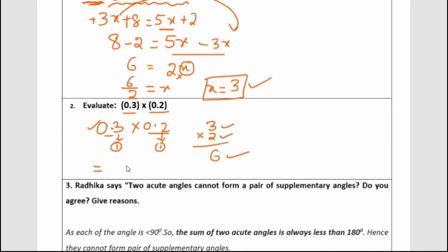We have to count the total decimal places in both numbers — there are two decimal places. So 3 multiplied by 2 gives 6, and placing two decimal points gives 0.06 as the result.